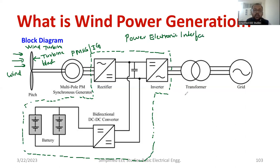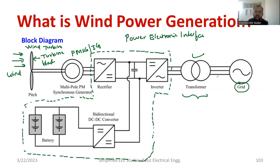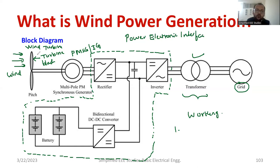For stepping up, we require one transformer. We can step up the voltage using the transformer, which can then be directly connected to the grid. The grid is a combination of power generation, power transmission, and power distribution. Now I am explaining the working. Due to differential heating of Earth, rotation of Earth, or different contour lines, the wind is formed. The wind directly hits over the turbine blades.